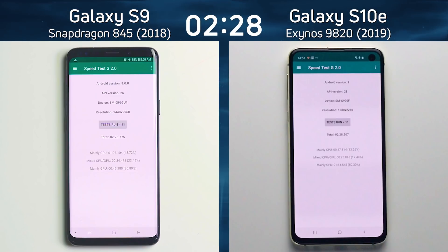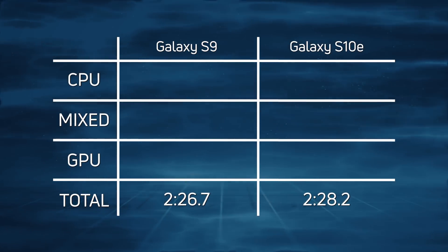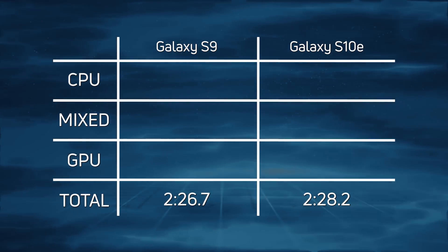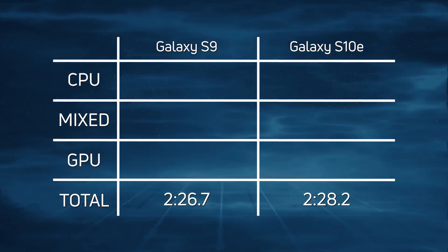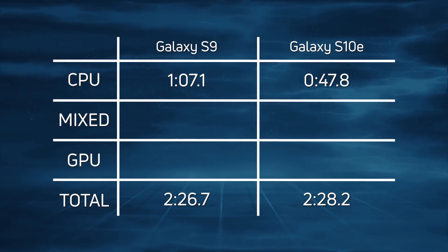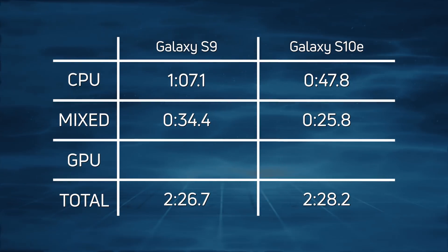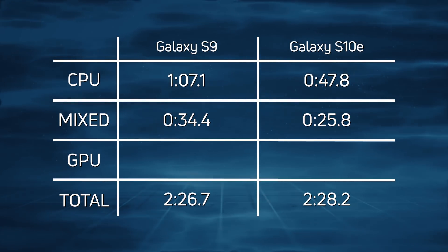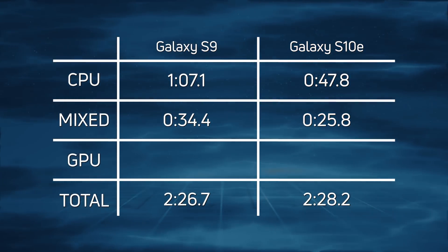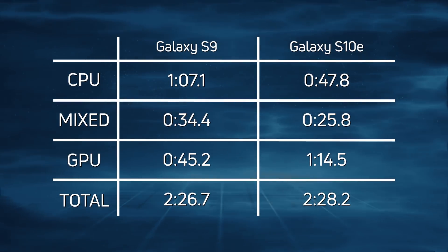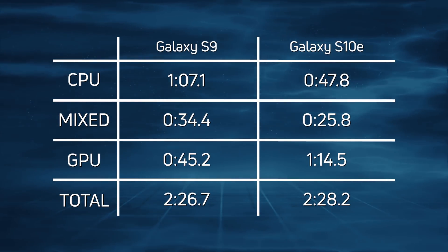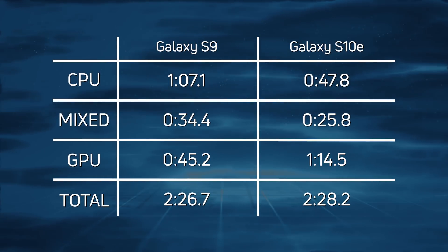The Galaxy S9 with the Snapdragon 845 pipped the Galaxy S10e with the Exynos to the post: two minutes 26.7 seconds versus two minutes 28.2 seconds — 1.5 seconds later for the Exynos-powered S10e. Looking at the CPU times, there's a clear win for the S10e: 47.8 seconds compared to 1 minute 7.1 seconds for the S9. In the mixed CPU-GPU part including the 2D smoke particle test, the S10e again won clearly: 25.8 versus 34.4 seconds. But in the Unity and Unreal tests everything changed — 45.2 seconds for the S9 versus 1 minute 14.5 seconds for the S10e, meaning the S9 clawed back the lead and finished 1.5 seconds ahead.